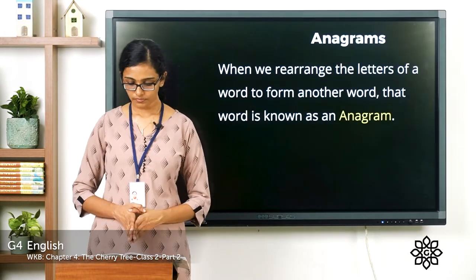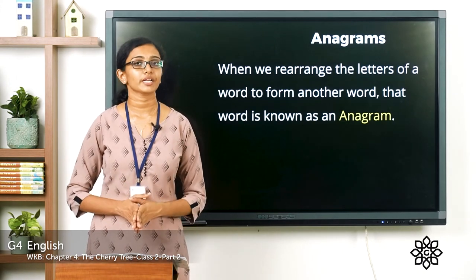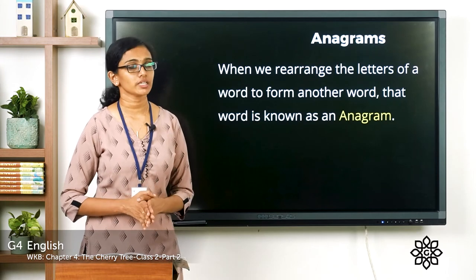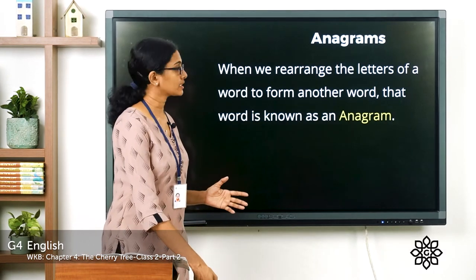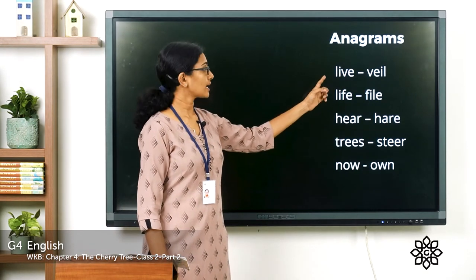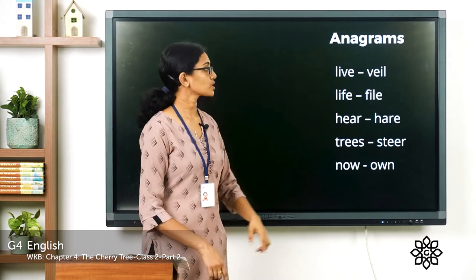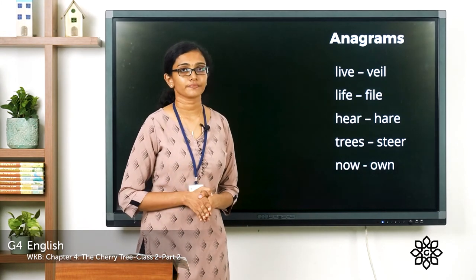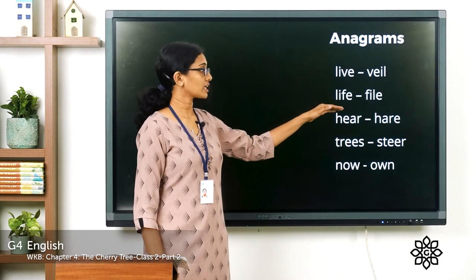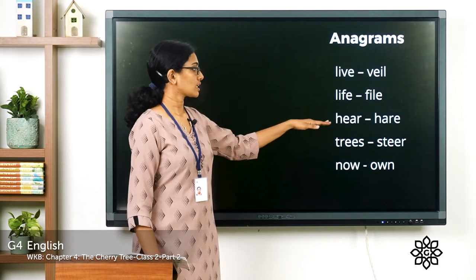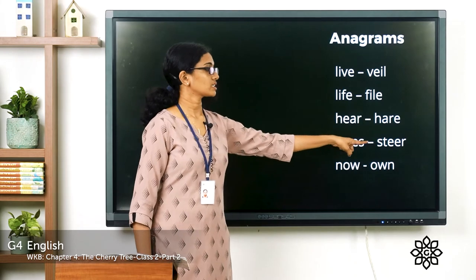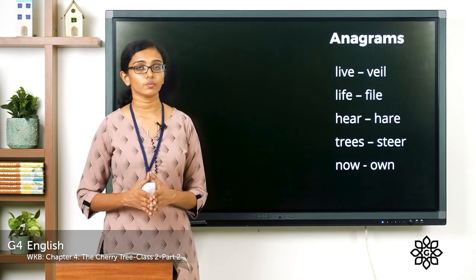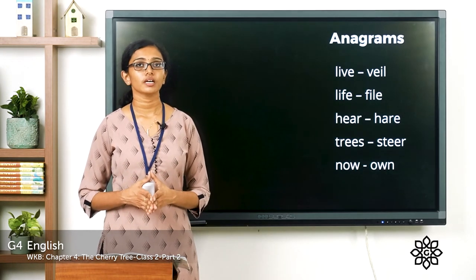Before we move on, let's learn about anagrams. Anagrams are words formed by rearranging the letters of a given word. For example, the letters L-I-V-E can be rearranged to form a new word. Similarly, 'life' can be rearranged to form 'filed.' 'Hair' and 'stem' are other examples. When you rearrange the letters of a given word to form a new meaningful word, that new word is called an anagram.